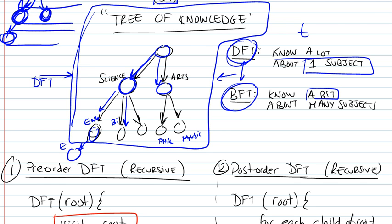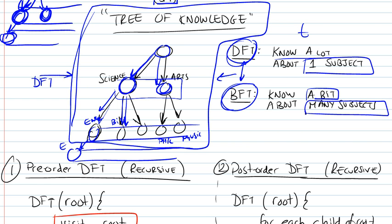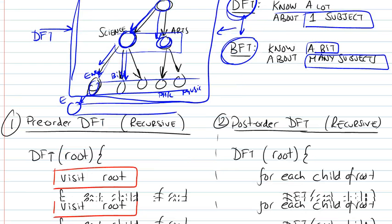A BFT person would know a lot about several topics. They would visit arts in a general sense, then engineering, then biology, sticking to levels. They would approach the tree level by level and know a bit about many subjects, whereas a DFT person would know a lot about one or a few subjects.